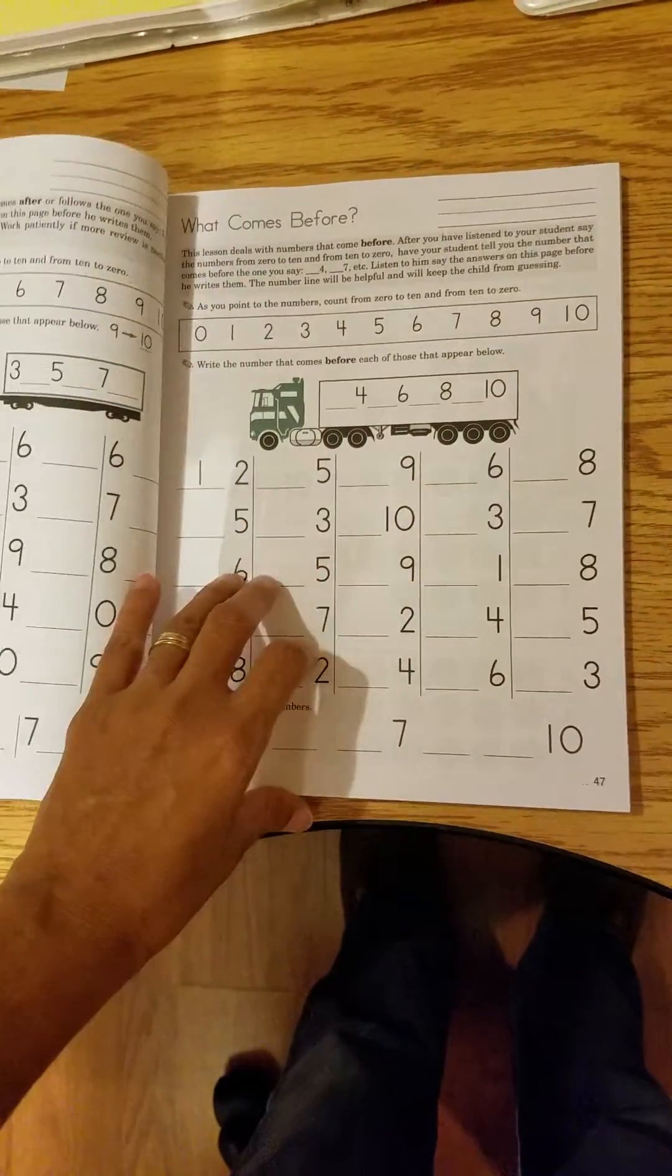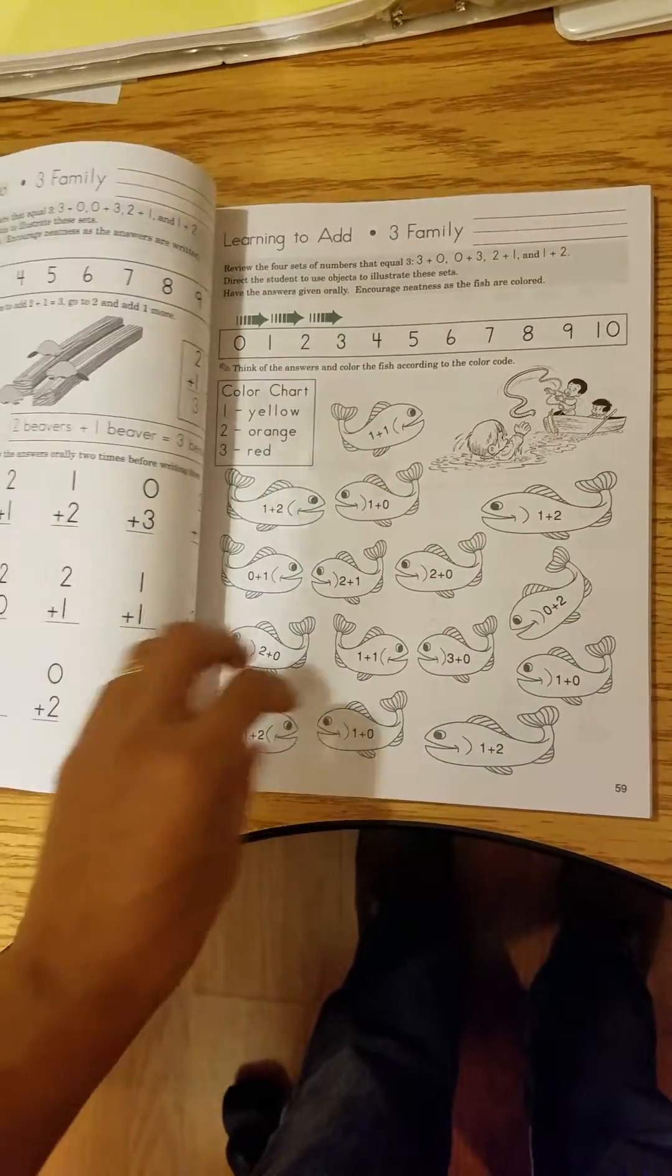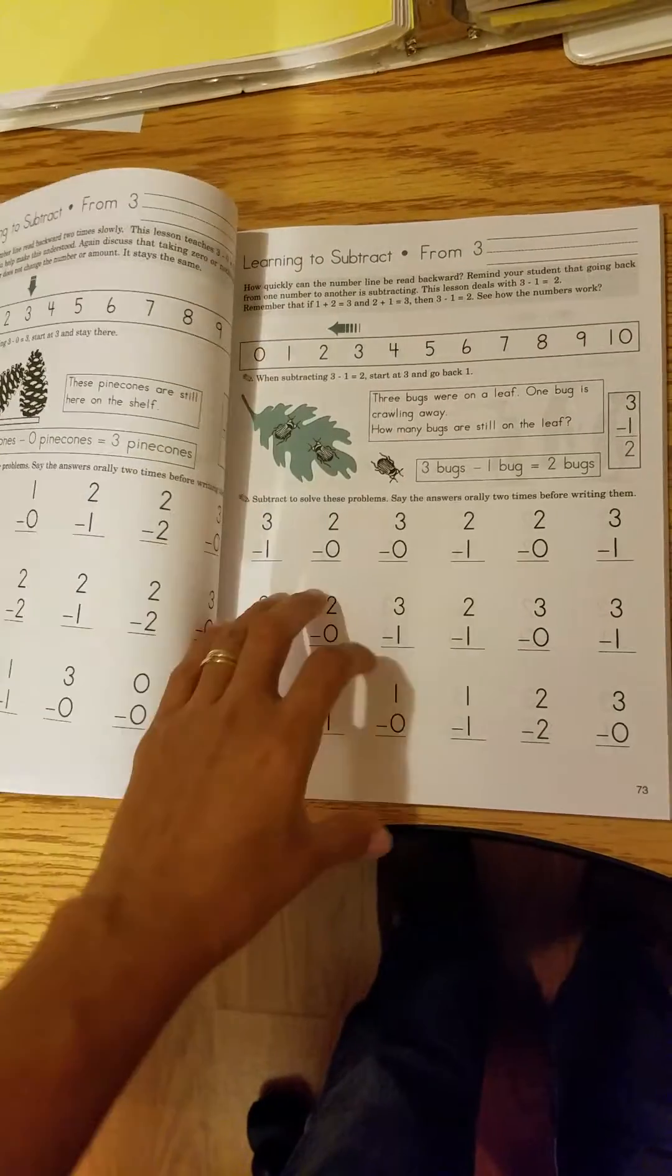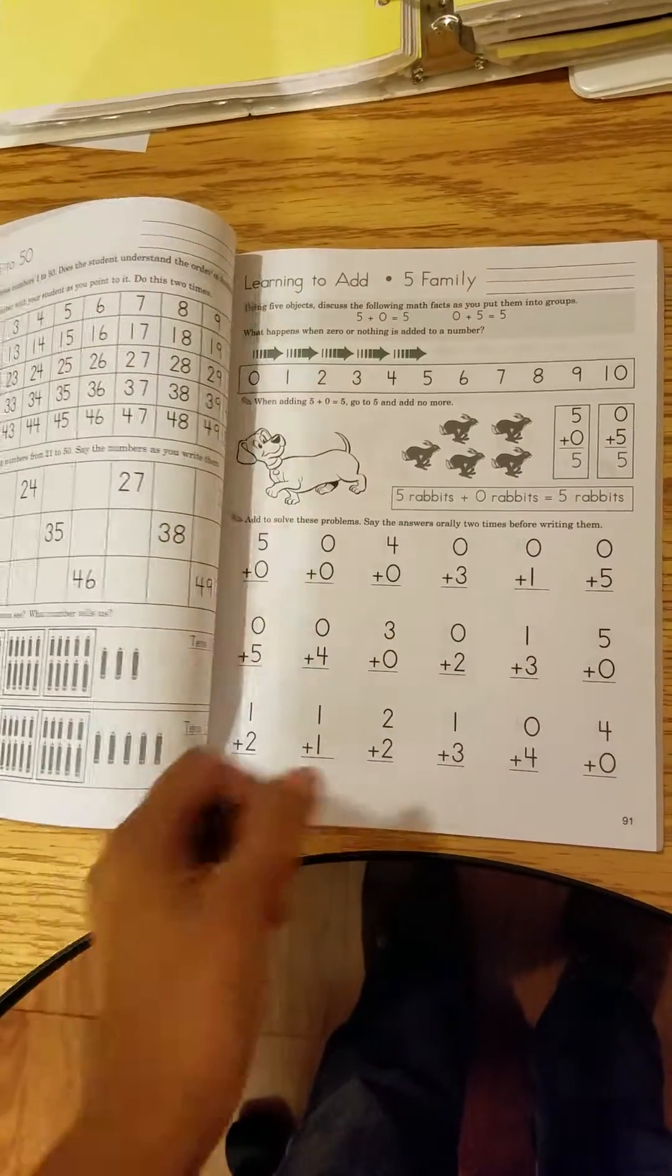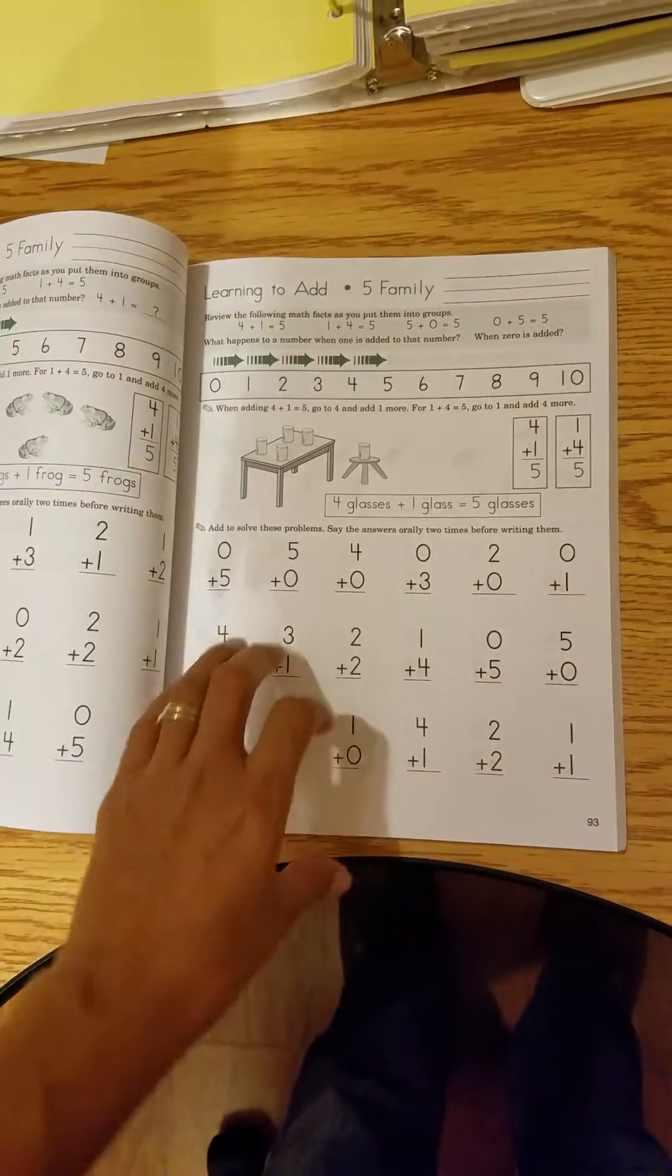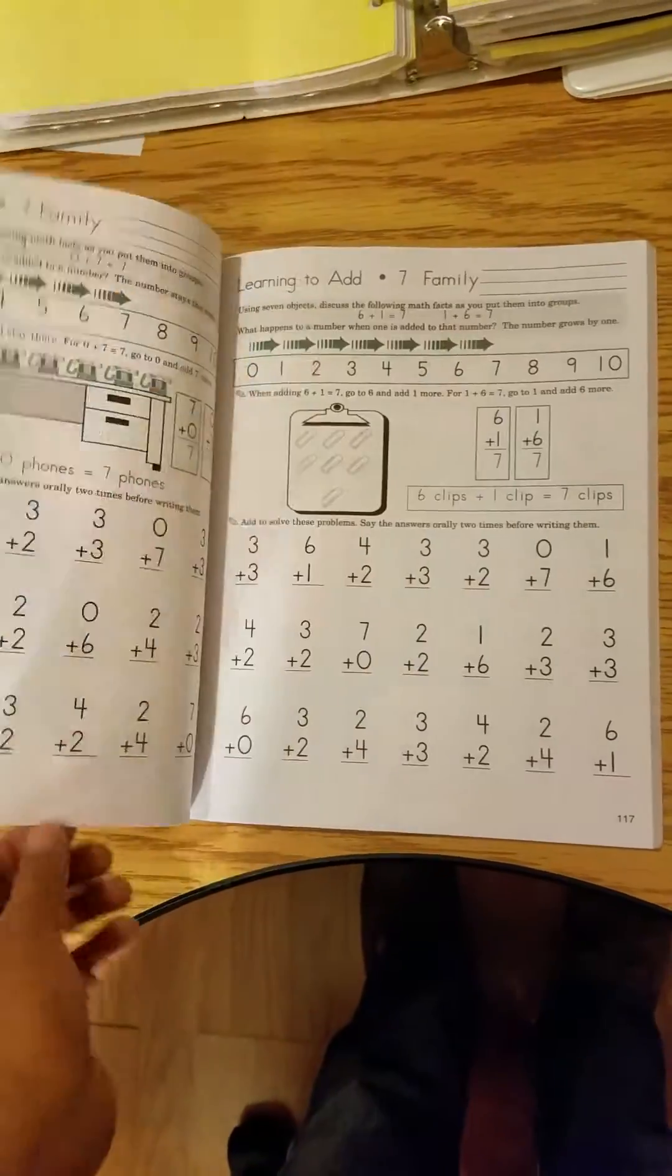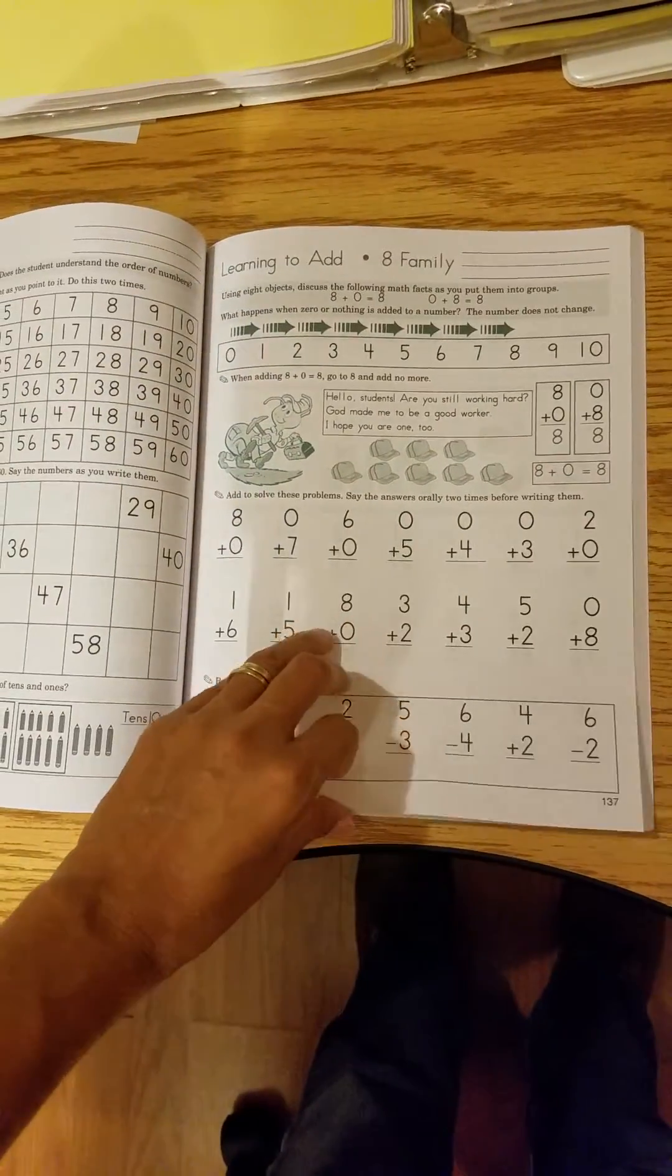Before and after, learning to add. I love how there is so much addition practice. Love that subtraction as well, learning to add and subtract at the same time. Thirties and forties, learning to add the five family, learning to subtract from five. Loving all this addition and subtraction practice. Okay, skip around a few pages.